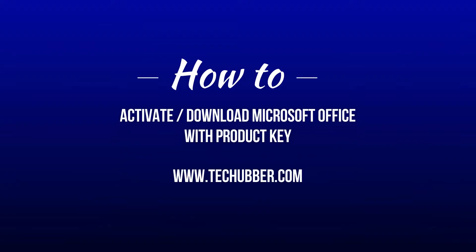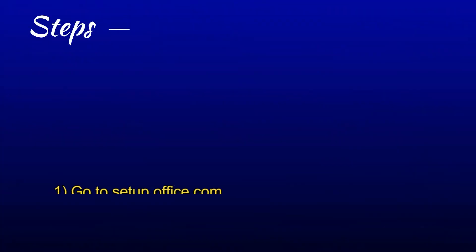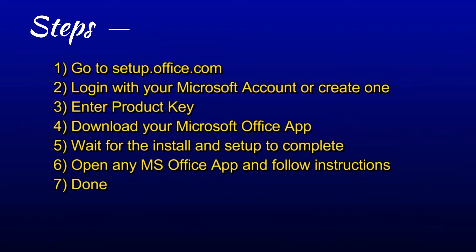In this video we will see how to activate and download Microsoft Office with a product key. In a nutshell, the steps include going to setup.office.com, entering our Microsoft account and the product key, downloading the setup file, and installing it.